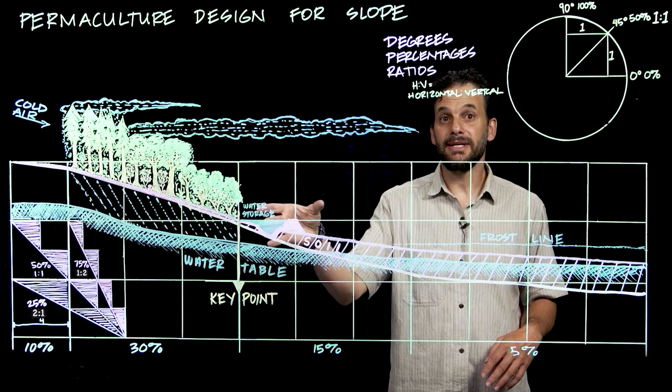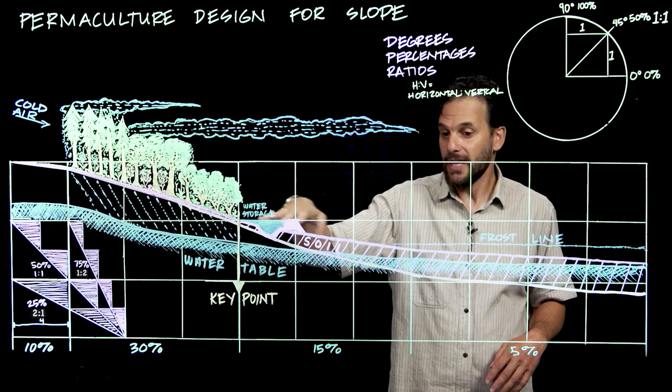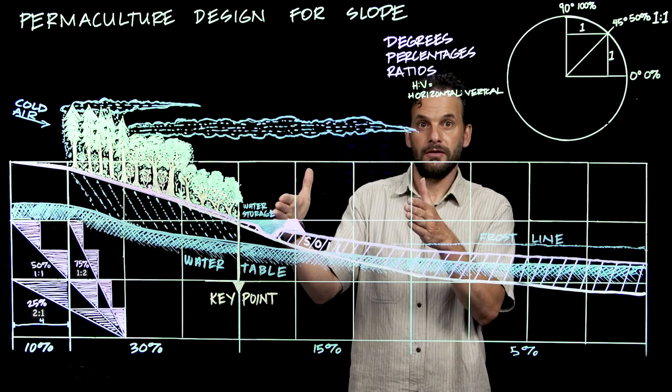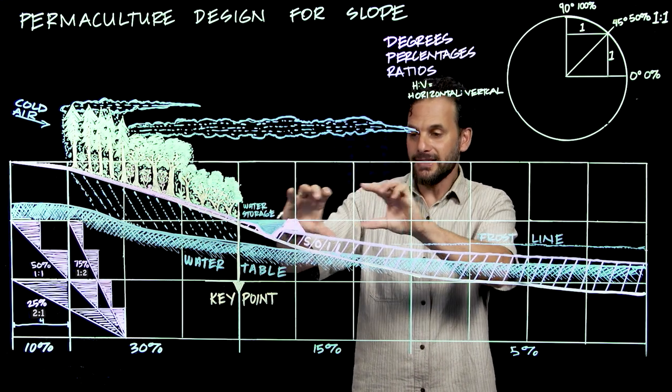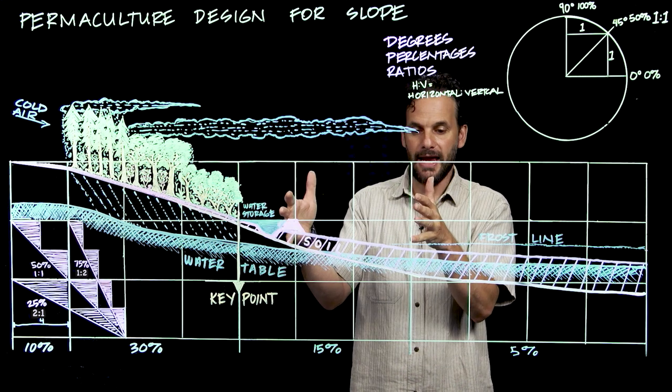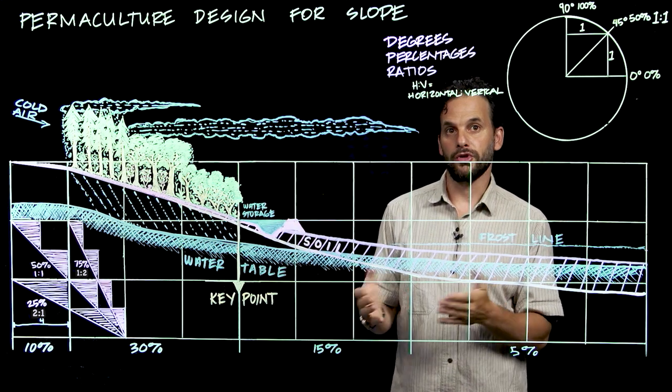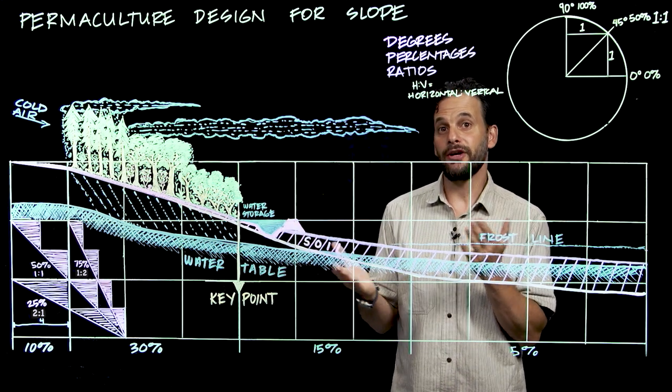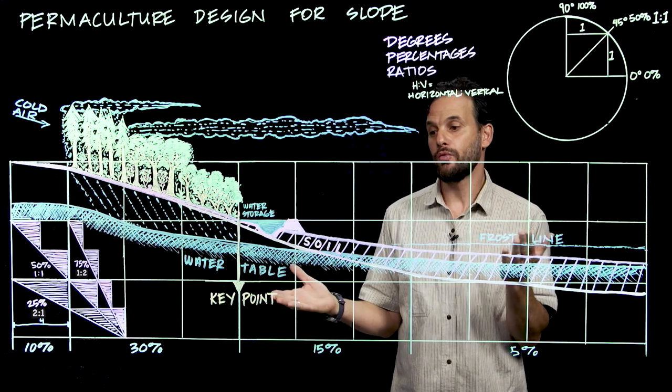So this area here in the mid slope, below the forest and above the frost line, this is considered the very best area for horticulture, and hence the best area for housing and zone one activities.